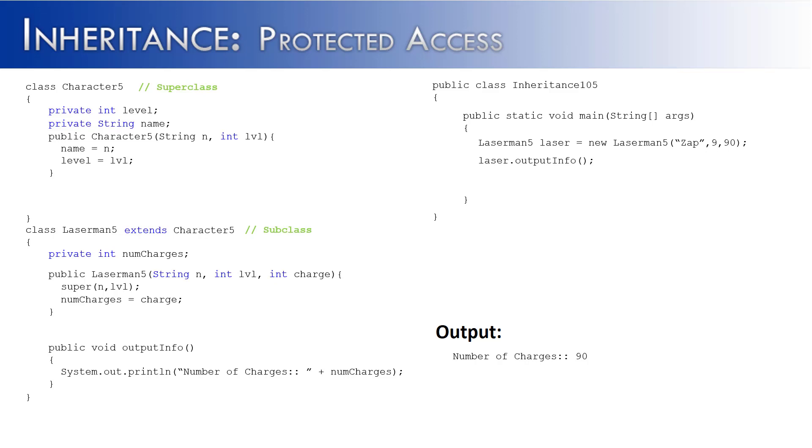Now let's say that we wanted to add something onto this, and instead of just outputting the numcharges, let's output the two instance variables of the superclass. We're going to do it using the exact same method we used for the one instance variable of the subclass, numcharges. We're just going to say name and level and try to access them this way. Unfortunately, it doesn't work. The reason why it's not working is because of access.